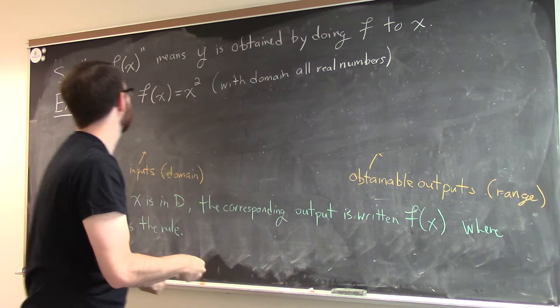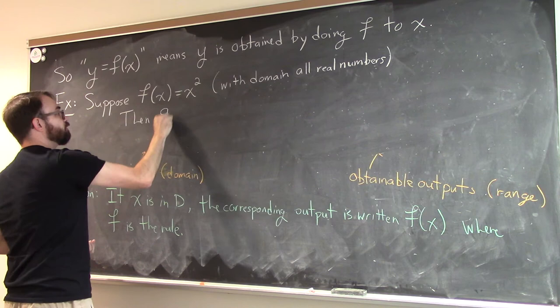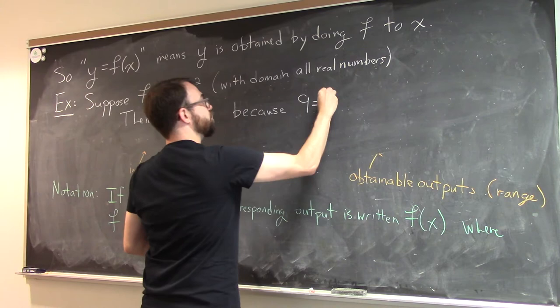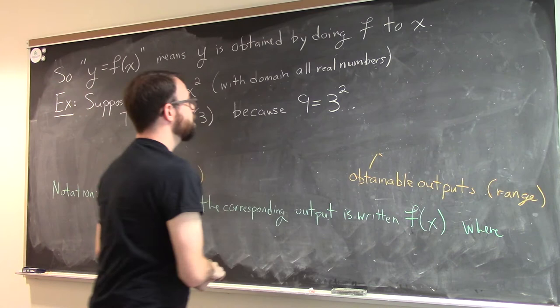So for example, then, 9 is the same as f of 3, because if we take 3 and we square it, we get 9.